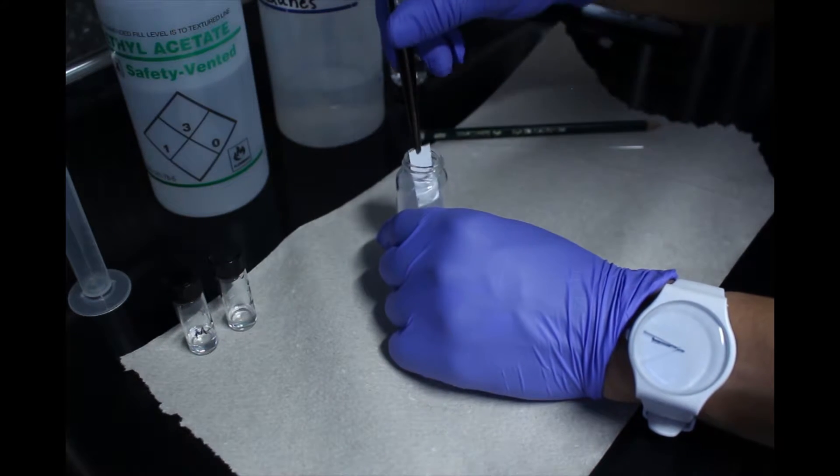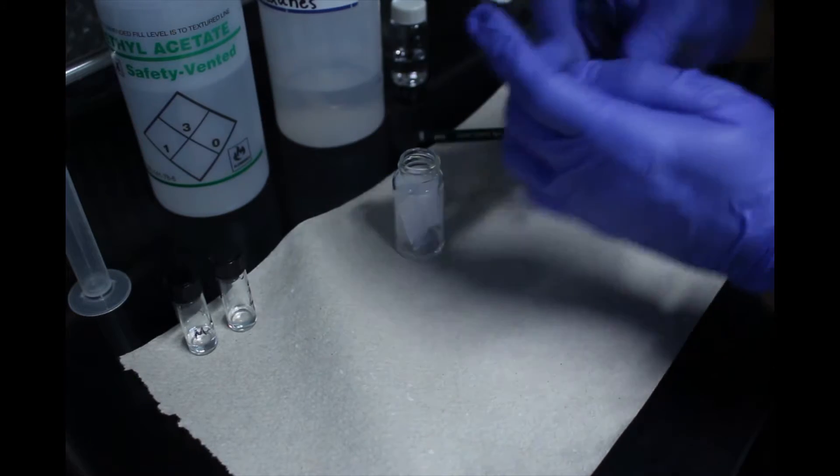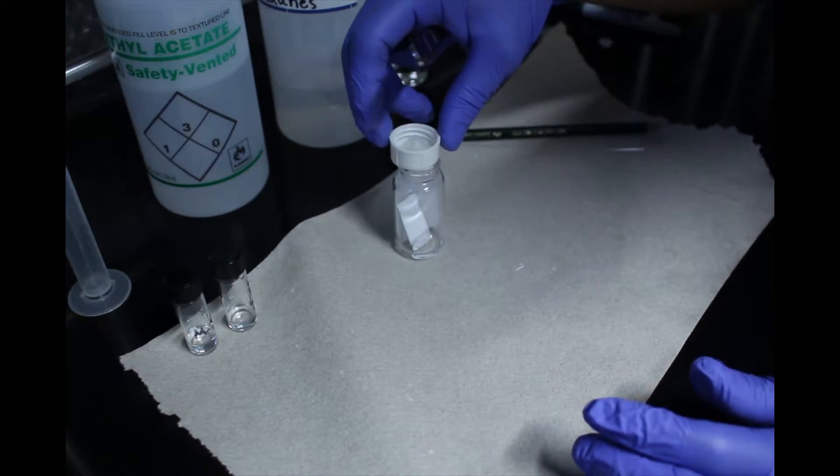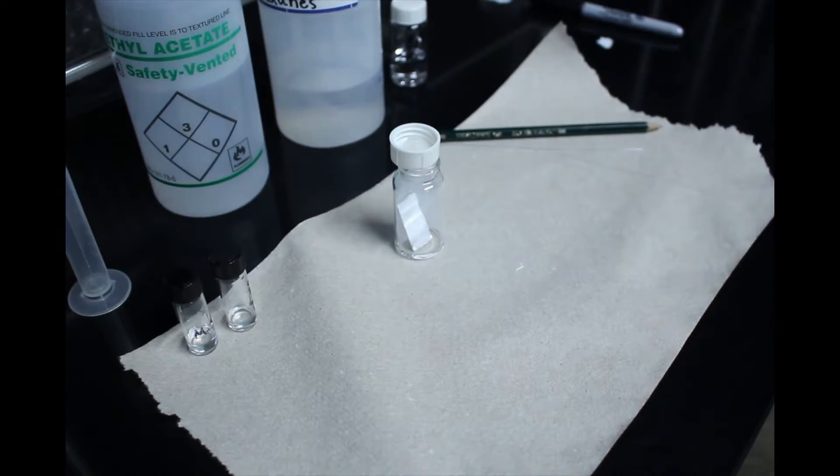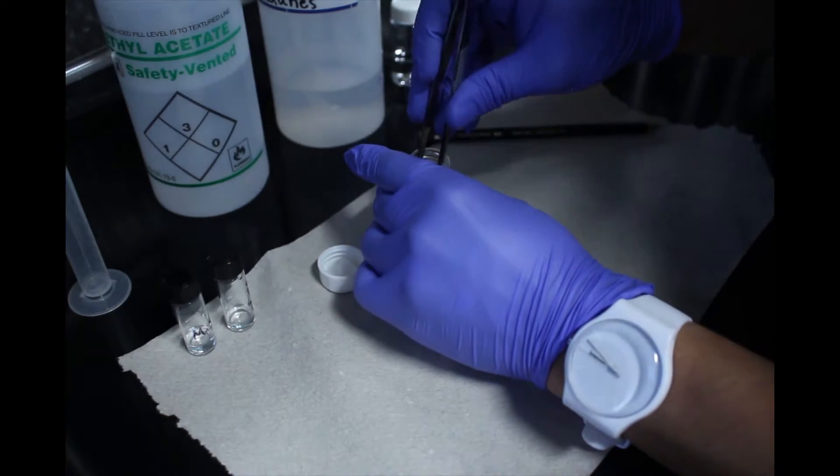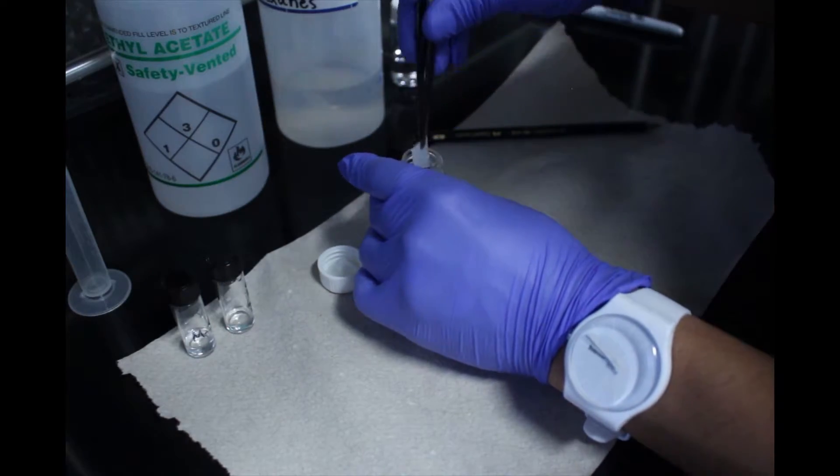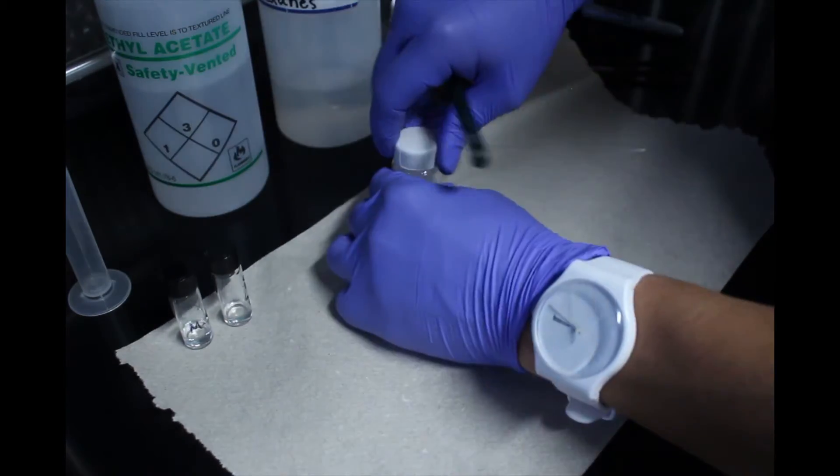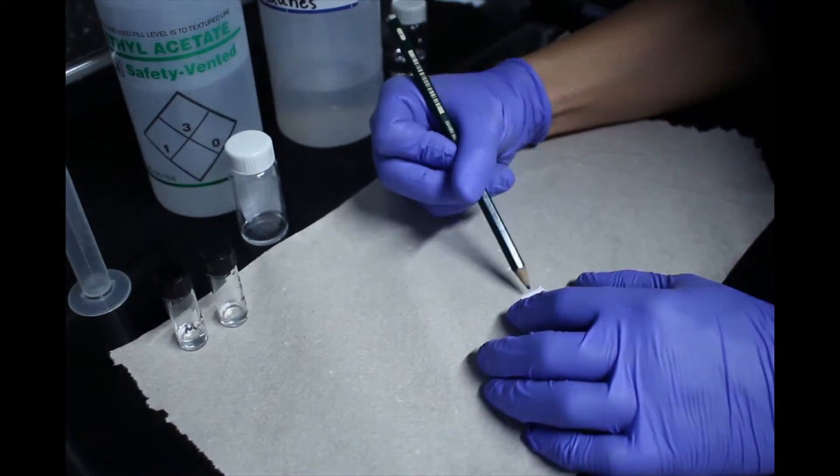Use tweezers to place the spotted TLC plate into the chamber. Place the cap on the chamber and wait until the solvent has traveled up the plate to just near the top. Do not disturb the chamber. Remove the plate and indicate how far the solvent has traveled by drawing a line. This is called the solvent front.